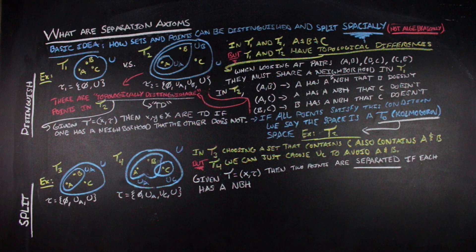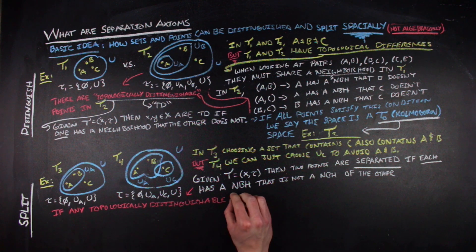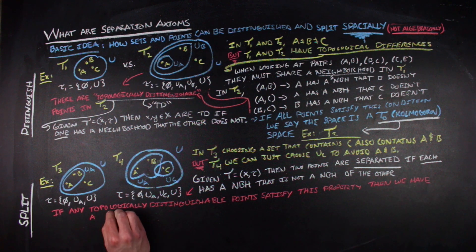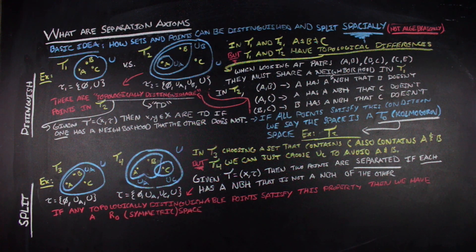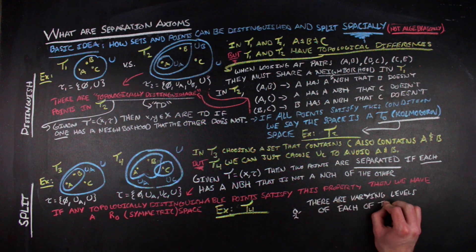In the separated version, looking at point c in our third example, we can't choose a neighborhood of c that doesn't contain a and b. But in our fourth example, we can choose a neighborhood of c that excludes a and b — this is the notion of separation of points. Given a topological space, two points are separated if each has a neighborhood that is not a neighborhood of the other. When topologically distinguishable points are separated in this way, we say we have an R0 or symmetric space. Note that not all points have to be topologically distinguishable — a and b can be non-equal but not topologically distinguishable from one another.